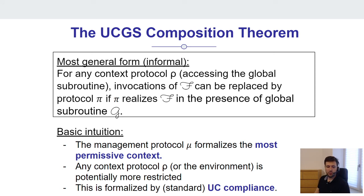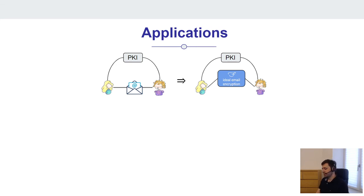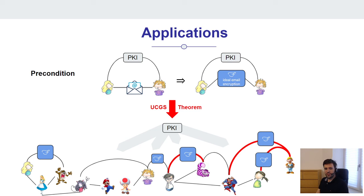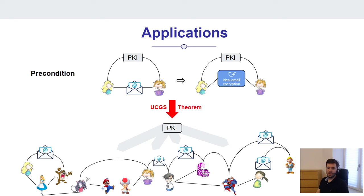This relates to the concept of UC compliance, which we also define in our paper. To illustrate how you would use this composition theorem: you would have a secure mail program proven secure in the sense that it realizes an ideal functionality in the presence of a global PKI. You have a context protocol where parties are using this functionality. Take the first thing as a precondition, apply the UCGS theorem, and start replacing ideal functionalities by the protocol that realizes it. Overall, you get the same security level when everybody is using the protocol and not the idealization of it — which is exactly what we wanted.